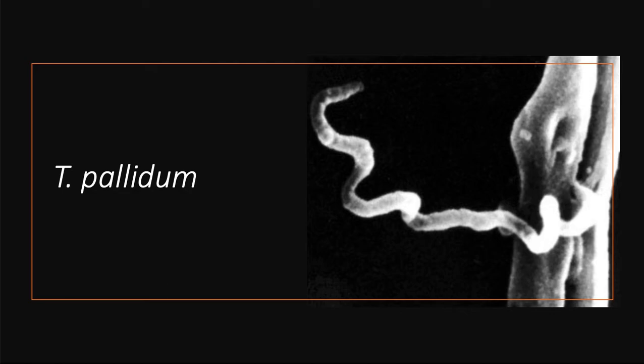The organism is transmitted from such lesions during sexual activity through minute breaks in the skin or mucous membranes of the uninfected partner. In congenital cases, Treponema pallidum is transmitted across the placenta from mother to fetus, particularly during the early stages of maternal infection.